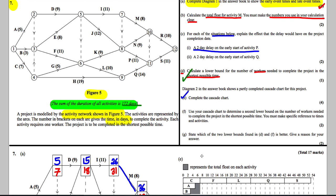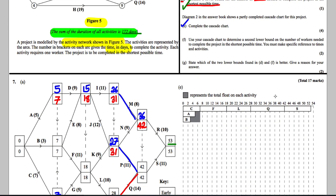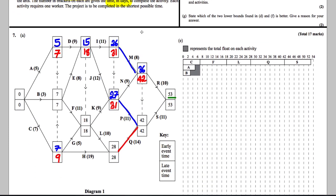For part E, we fill in the cascade chart. Activities C, F, L, Q, S, A, and B are already done. For D: it can start at 5 and is 9 long going up to 14, but could go up to 18. So we draw the box from 5 to 14 with slack extending to 18. For E: it starts at 7 and is 8 long going to 15, but could go up to 18. We shade in the slack and label it E.